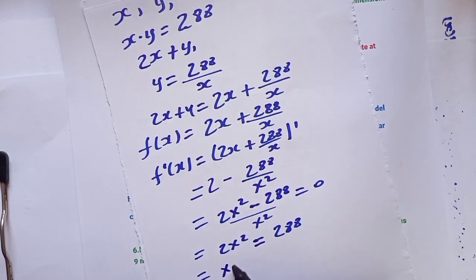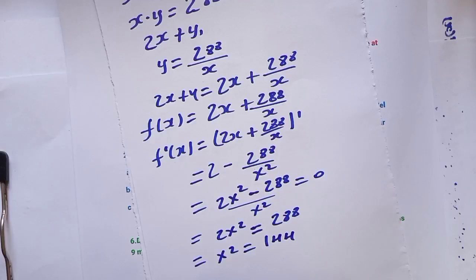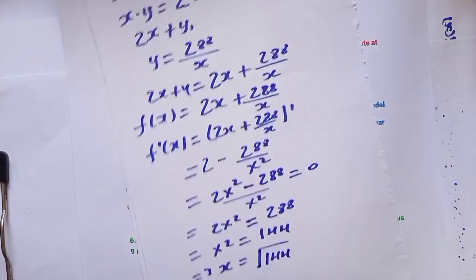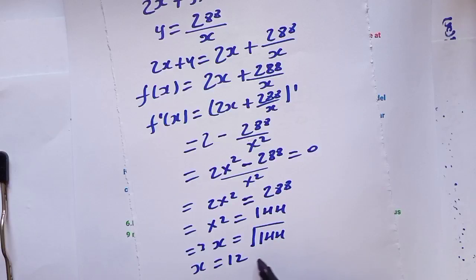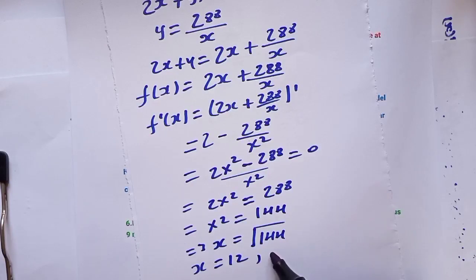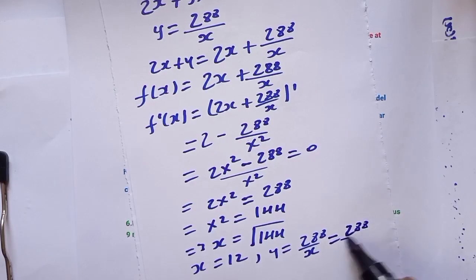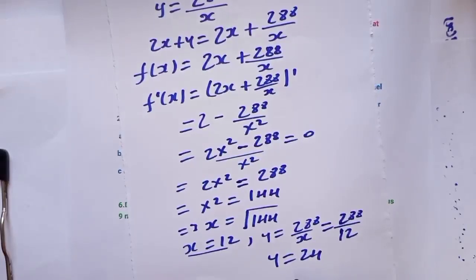Dividing both sides and solving gives x² equals 144. Therefore x equals the square root of 144, which equals 12. The first number is 12. To find y, substitute x equals 12 into y equals 288 divided by x: 288 divided by 12 equals 24. So the first number is 12 and the second number is 24.